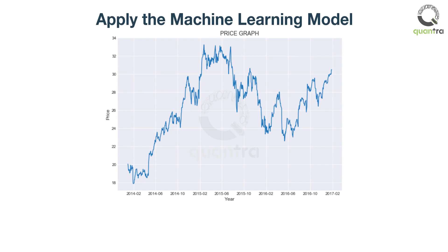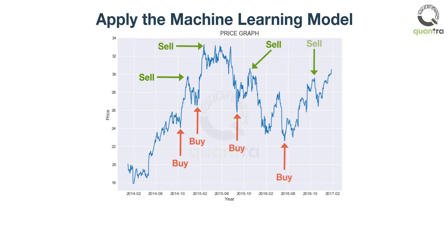Apply the predictions from the ML model defined on this data to generate the trading signals. As per the rules defined, you buy the stock around November 2014 at $24 and sell it around December 2014 at $30. Similarly, there were other trading signals also generated.